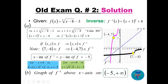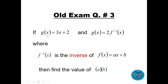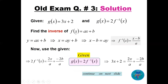Question number three: we have g(3x + 2) and g(x) = 2·f⁻¹(x), where f(x) = ax + b. Find the value of a × b. First find f⁻¹: starting from y = ax + b, interchange x and y, solve — giving f⁻¹(x) = (x − b)/a. Multiply by 2: 2·f⁻¹(x) = 2x/a − 2b/a. This equals g(x), so g(3x + 2) = 2x/a − 2b/a.